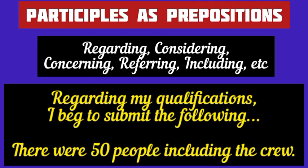Now, the use of participles as prepositions. There are some present participles that are also used as prepositions in certain cases. For example, regarding, considering, including, and so on. Regarding my qualifications, I beg to submit the following — here, regarding is used as a preposition. There were some 50 people on board including the crew — here, including, the present participle, is a preposition.